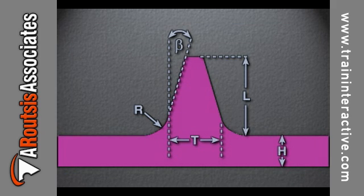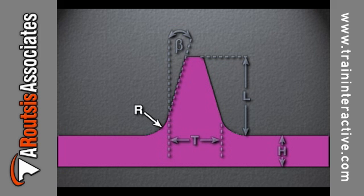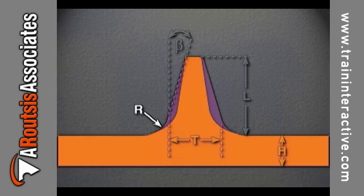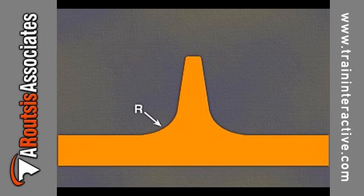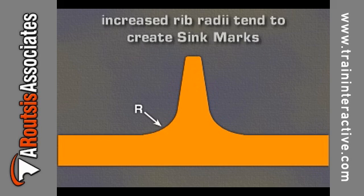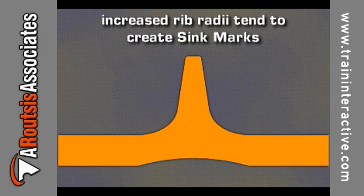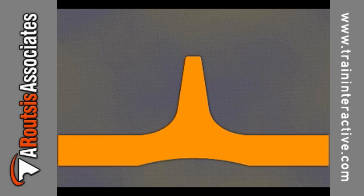The rib radius, represented by R, is critical to rib strength. Without a radius, the corner of the rib would be a stress concentration, which would weaken the rib and reduce its strengthening benefits. Unfortunately, increasing the rib radius also increases the width of the bottom of the rib, having the same effect as increased rib thickness. Increased rib radii tend to create sink marks. Therefore, a thicker rib requires a smaller radius. On the other hand, if a smaller rib is used, a larger radius may be acceptable.